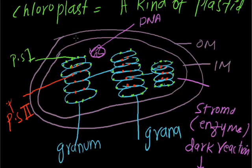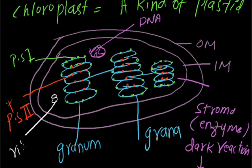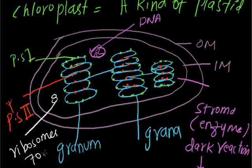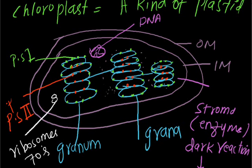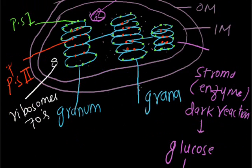And there will be some ribosomes. These are ribosomes. The ribosomes are of what kind — it is 70S type of ribosomes that will be present. And it is matrix, or stroma. This is all about the chloroplast molecule.